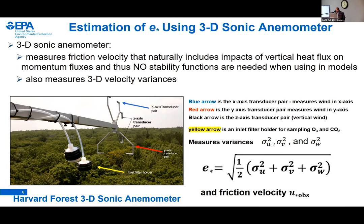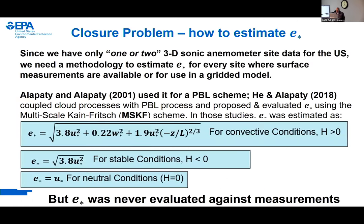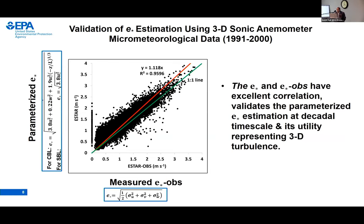The key problem is how to estimate and parametrize E*. I developed a boundary layer scheme equations for E* for convective, stable, and neutral conditions, but never had an opportunity to validate against measurements until now. Looking at the 3D sonic anemometer data for about a decade — the x-axis is observed E* and the y-axis is parametrized based on those equations — you can see an excellent correlation. R-squared is 0.96, which was really surprising, and this parametrization opens a new avenue for modeling turbulence effects on dry deposition.